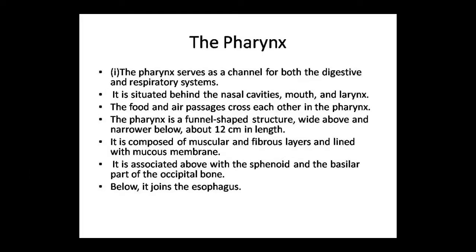The pharynx is part of both the digestive and respiratory systems, connecting the nasal cavity, mouth, and larynx. Food and air passages cross through the pharynx. The pharynx is a funnel-shaped structure — wide at the top, approximately 12 cm, and narrow at the bottom. It has muscular and fibrous layers lined with mucous membrane.